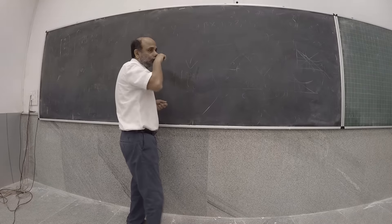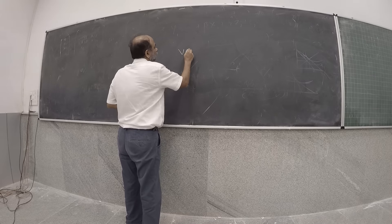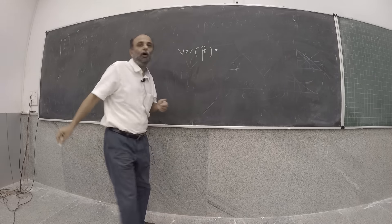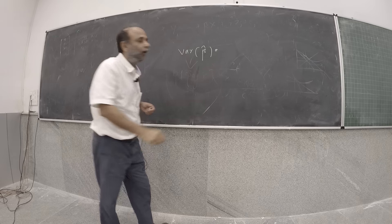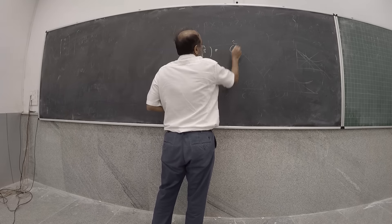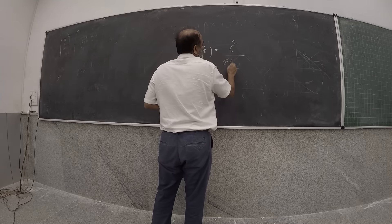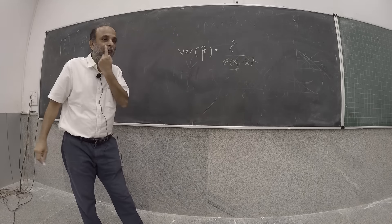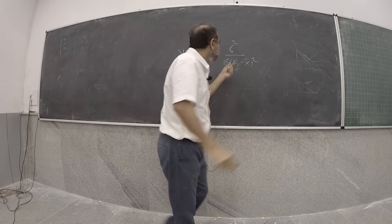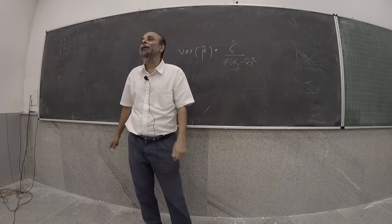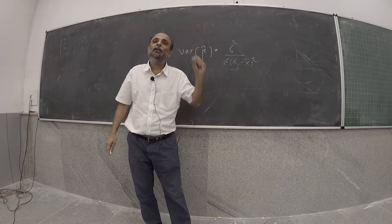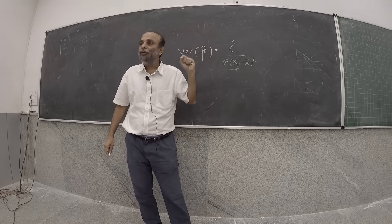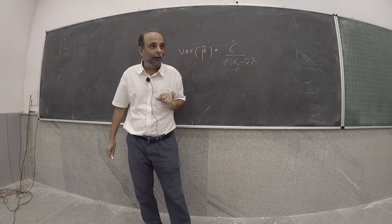OK folks, so in the last class, what did we see? We saw that the variance of beta hat was sigma squared over the summation of xi minus x-bar squared, where sigma squared was the variance of the error term, and summation of xi minus x-bar squared was the sum of the squared deviations of each of the xi's from its mean.